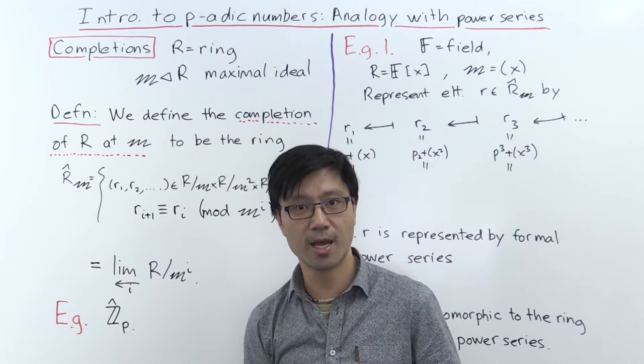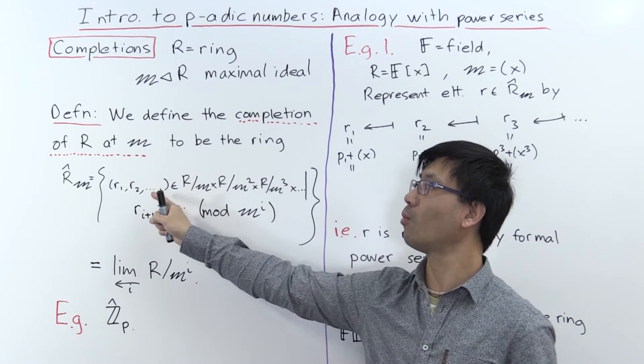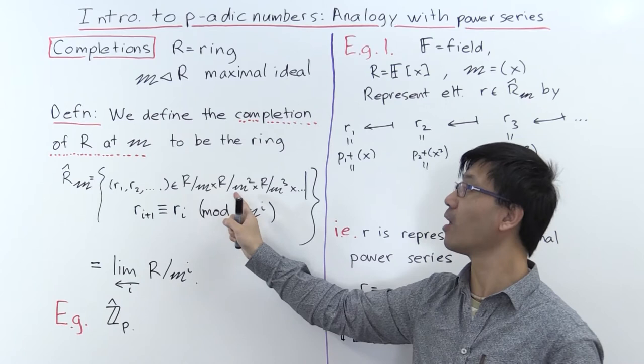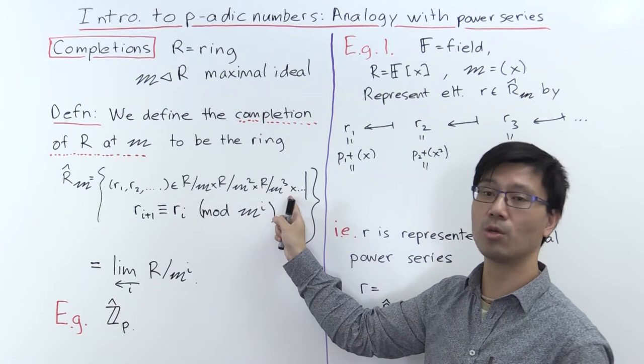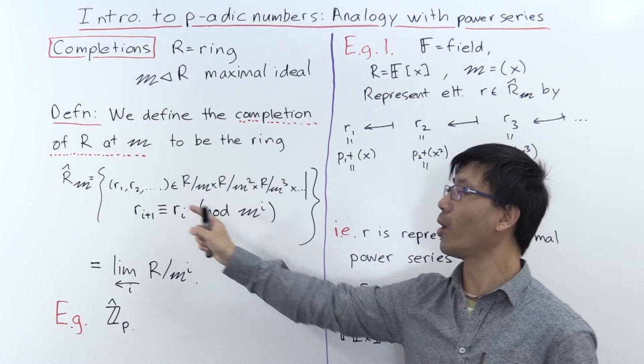Given this piece of data, we can talk about the completion of R at M. That's going to be a ring defined the same way I defined the p-adic numbers. What we'll do is look at successive quotients of R modulo powers of the ideal M: R mod M, cross R mod M squared, cross R mod M cubed, and so forth. And we just pick tuples inside there.